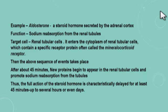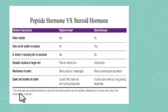Aldosterone takes 45 minutes to exert its action, and it can also take several hours or even days. In contrast, protein hormones give an instant action because they are already synthesized and stored in secretory vesicles. So steroid hormones take minutes to hours or even days. This is important for MCQs — how much time does aldosterone take to exert its action? The answer is 45 minutes.